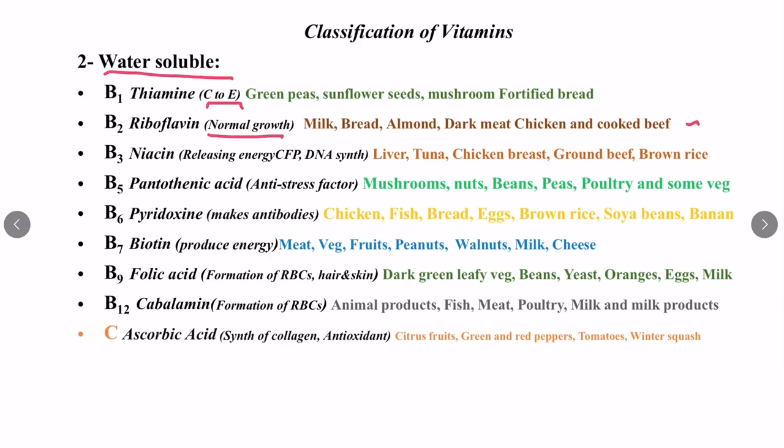Vitamin B3 is called niacin, and it is responsible for releasing energy from carbohydrates, fats, and proteins, and it also helps in DNA synthesis. Sources are liver, tuna, chicken breast, ground beef, and brown rice. Vitamin B5 is called pantothenic acid, and it acts as an anti-stress factor. Sources are mushroom, nuts, beans, peas, poultry, and some vegetables.